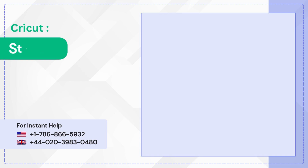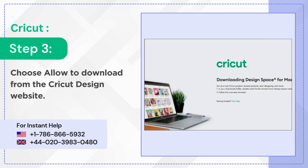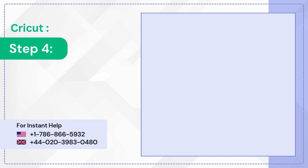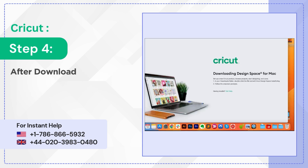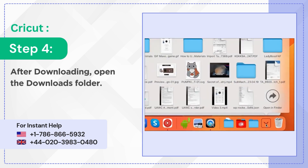Step 3: Choose Allow to Download from the Cricut Design website. Step 4: After downloading, open the Downloads folder.